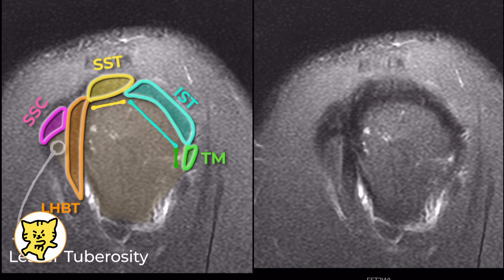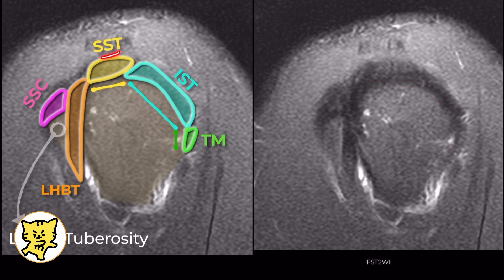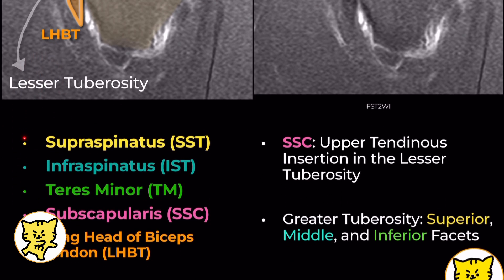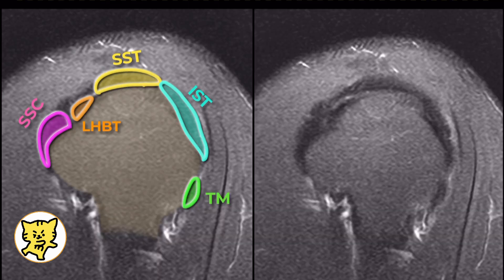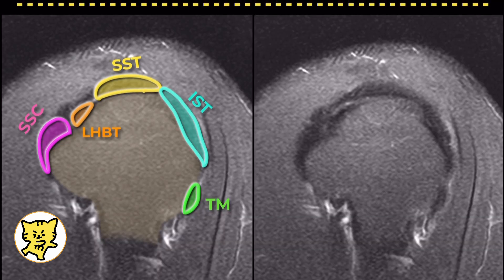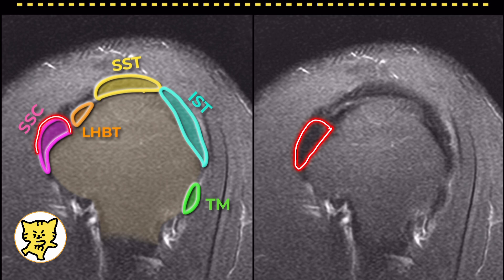It's worth noting that the supraspinatus tendon footprint on the greater tuberosity is actually smaller than what we used to think. A lot of this area is occupied by the infraspinatus tendon instead. On more medial sagittal images, the rotator cuff tendons blend together. Keep an eye on how the subscapularis tendon footprint sits right in front of the long head of the biceps tendon.